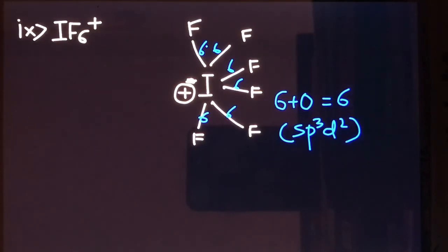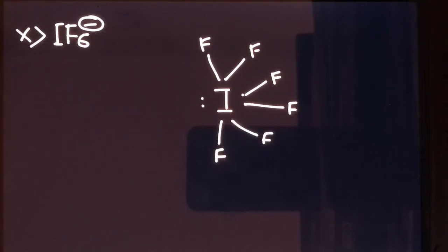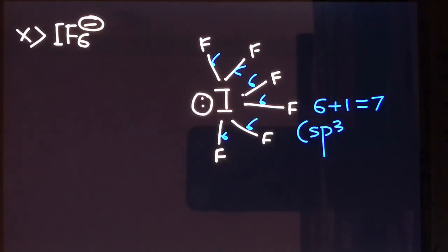Now let's see IF₆⁻. Iodine has seven outermost electrons and forms six bonds with fluorine using six valence electrons. There is one electron left, and with the negative charge, one extra electron is added to iodine, giving one lone pair. The total number of sigma bonds is six and lone pair of electron on the central atom is one. So the steric number is seven and the hybridization will be sp3d3.